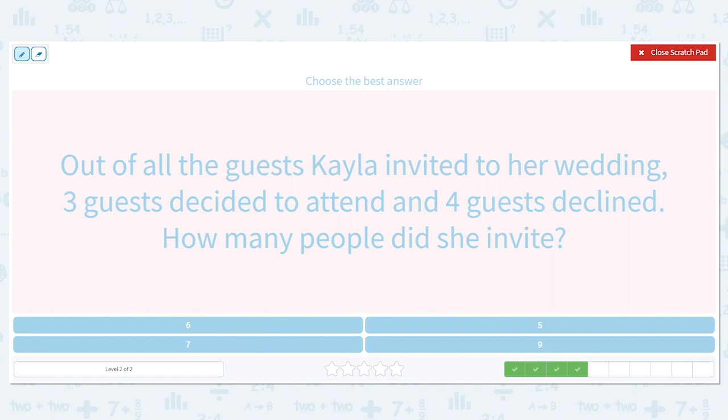Okay, we want to know how many people were invited. Means we're adding again. How many actually came. And how many said no. How many declined. Four.